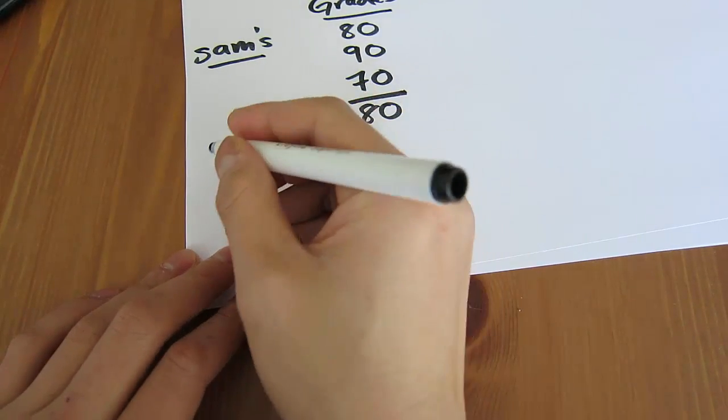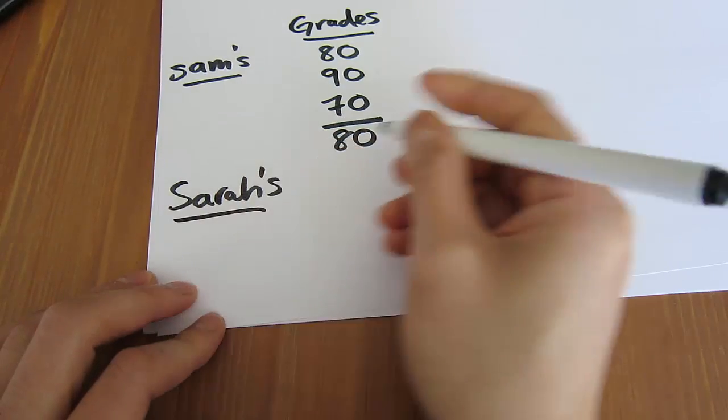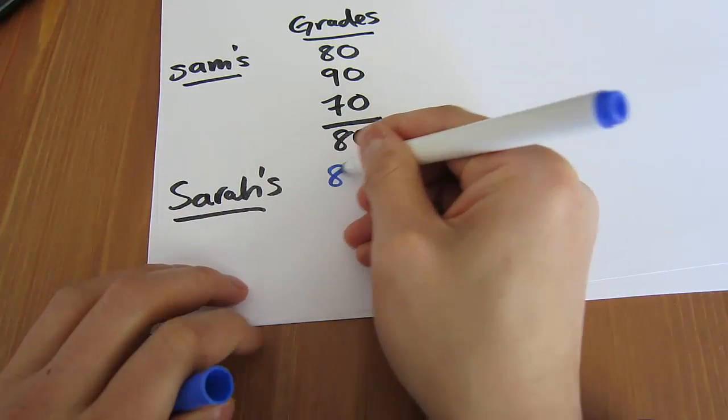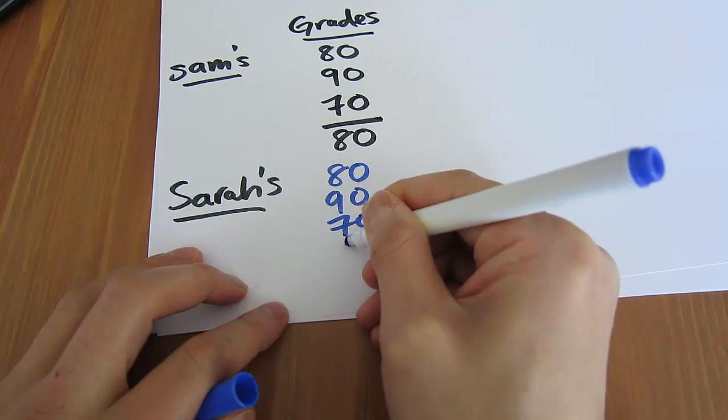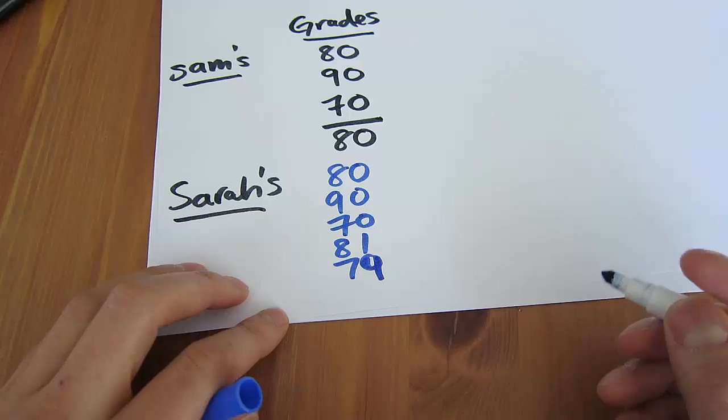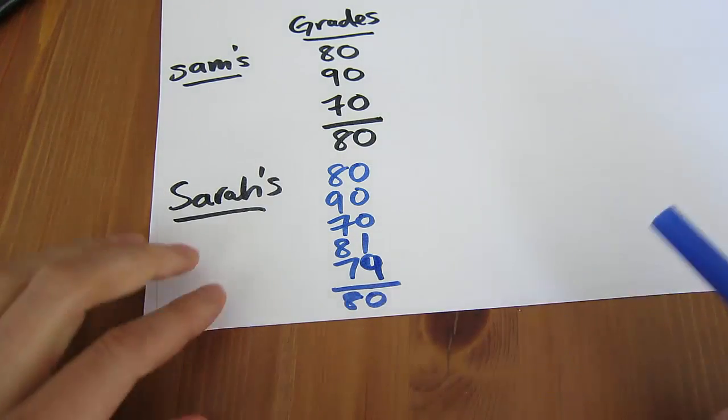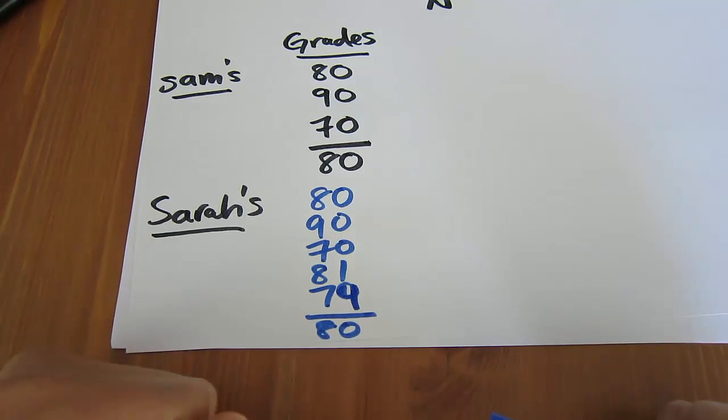And similarly, we look at Sarah's class. Sarah's students score 80, 90, 70, 81, and 79. And so again, their average is also 80. So the averages are the same, but the question is, who's a more consistent tutor? Whose grades are closer, whose grades exhibit less spread or more spread?